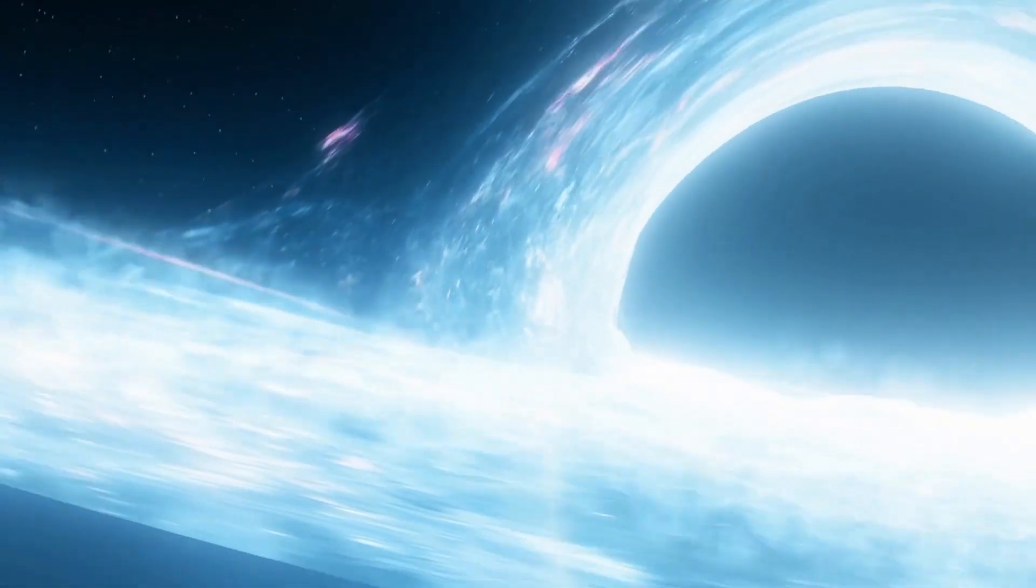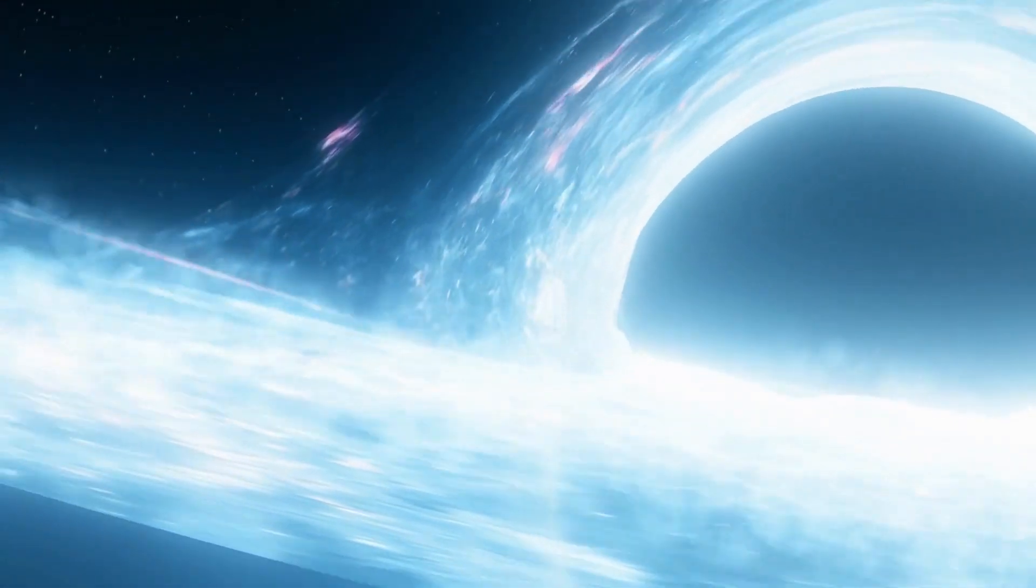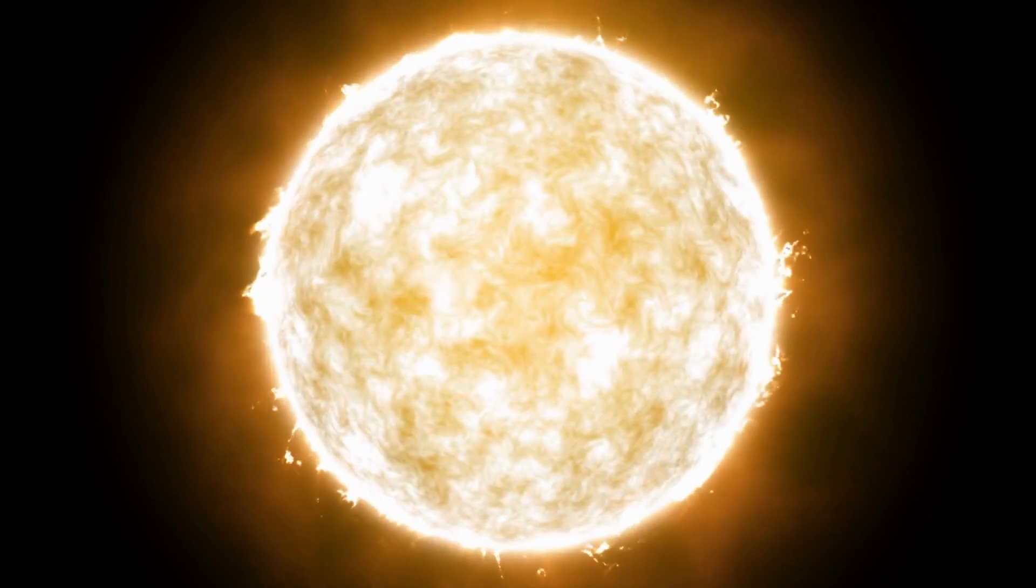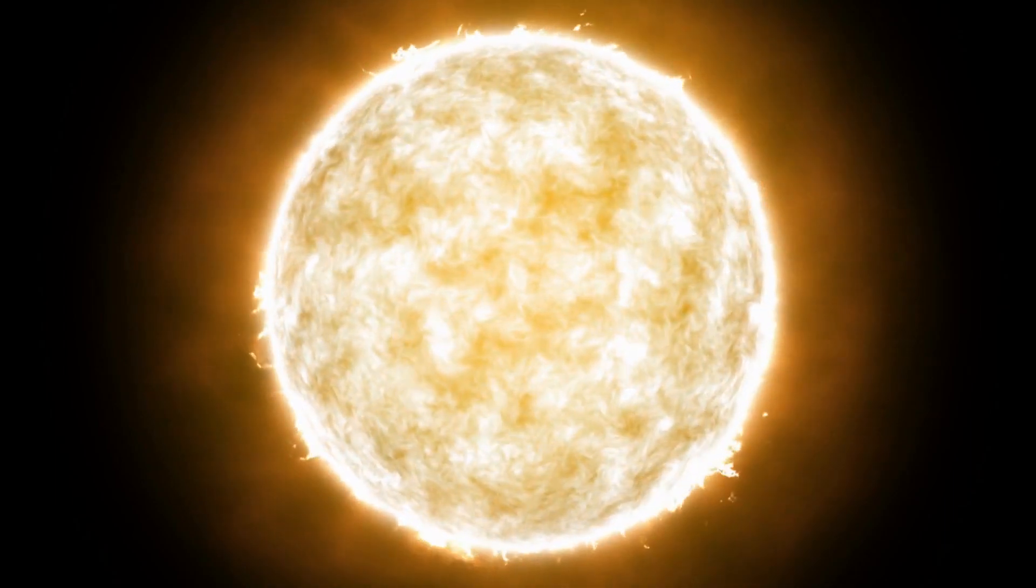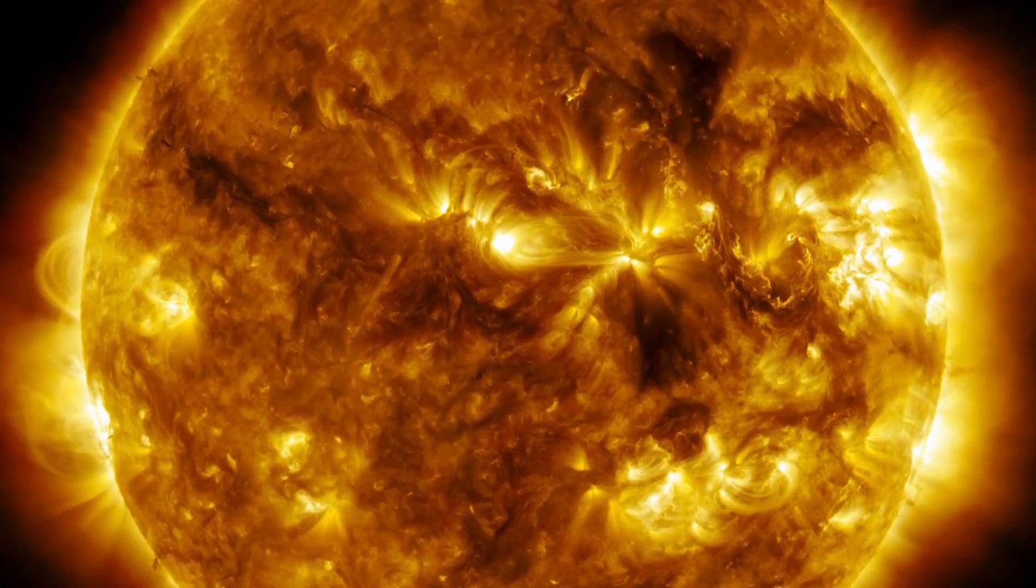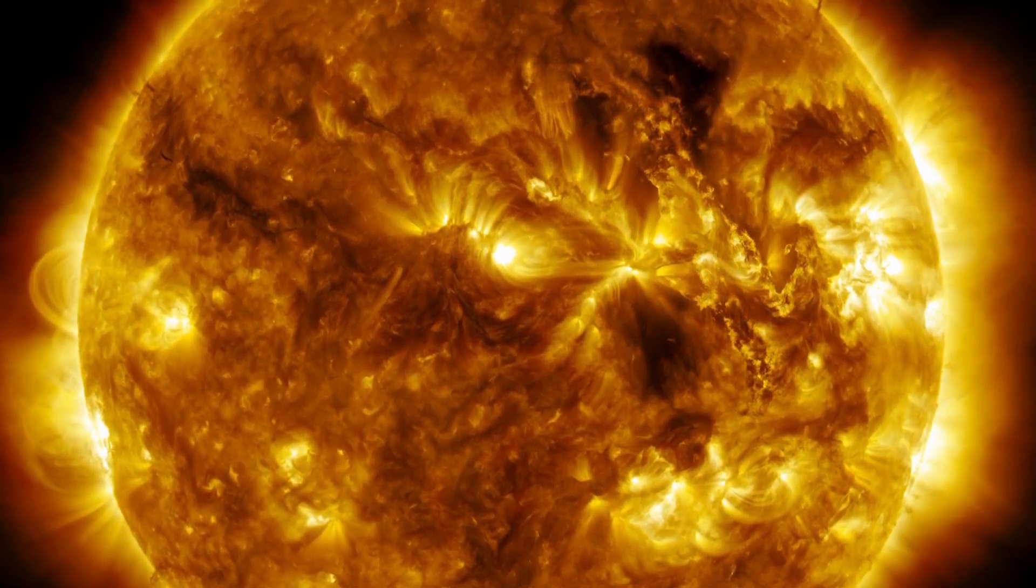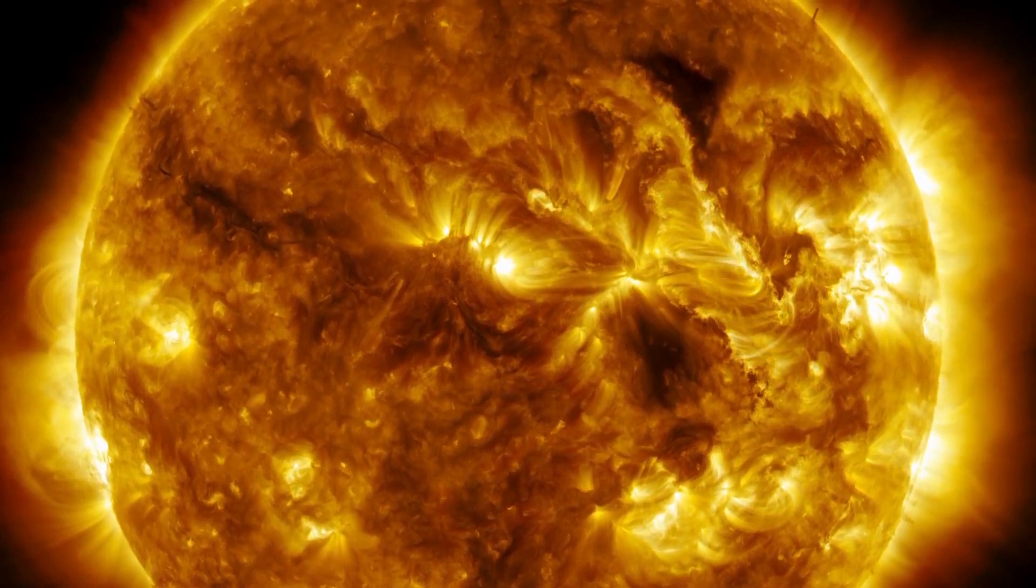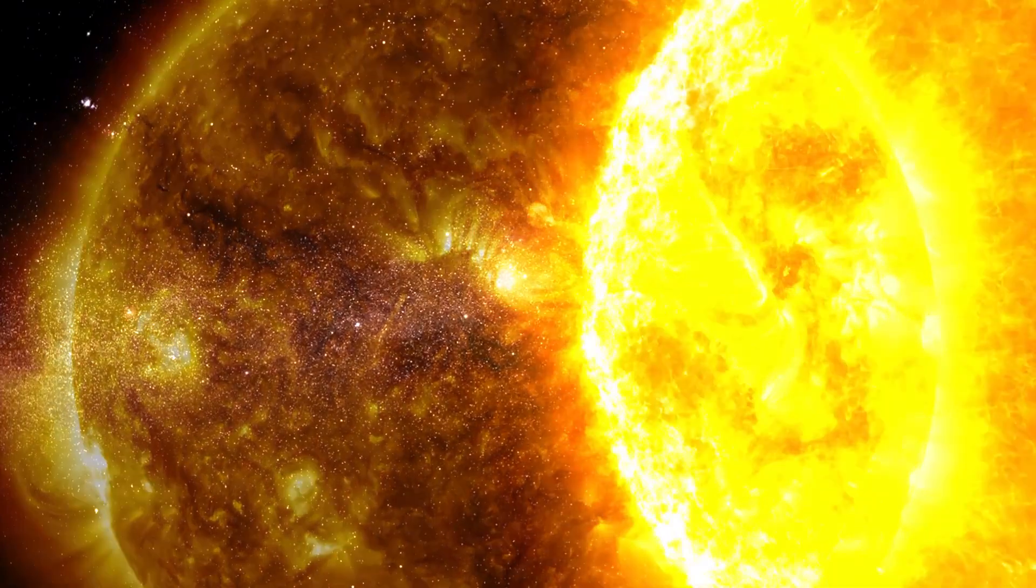To understand how black holes formed and what happens inside them, it is necessary to go back to the life cycle of a massive star. These massive stars are true cosmic powerhouses fueled by the incredible nuclear fusion reactions that take place in their cores. The sun's energy source comes from the fusion of hydrogen into helium. During this process, two hydrogen atoms combine in a collision and form a helium atom. As long as the star has enough hydrogen to carry out the fusion, it can maintain its brightness.